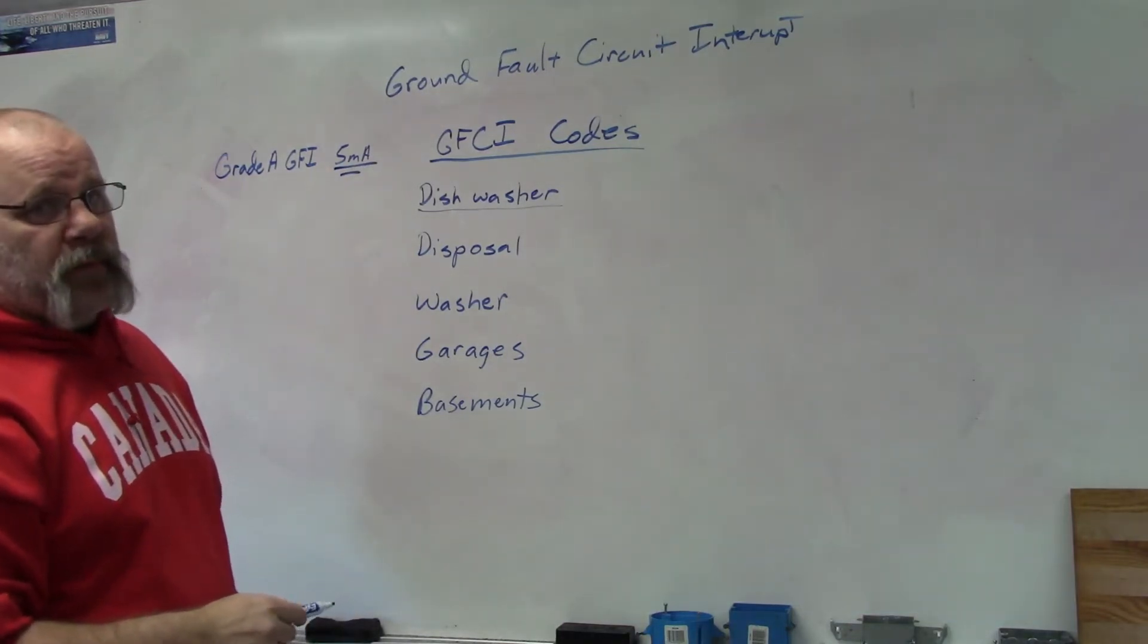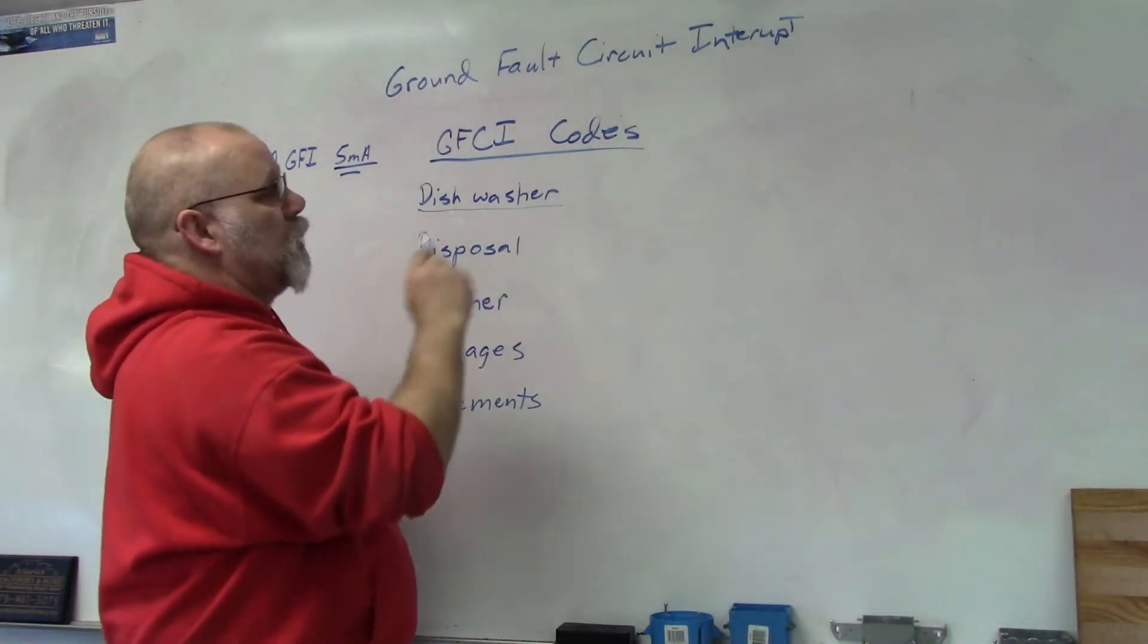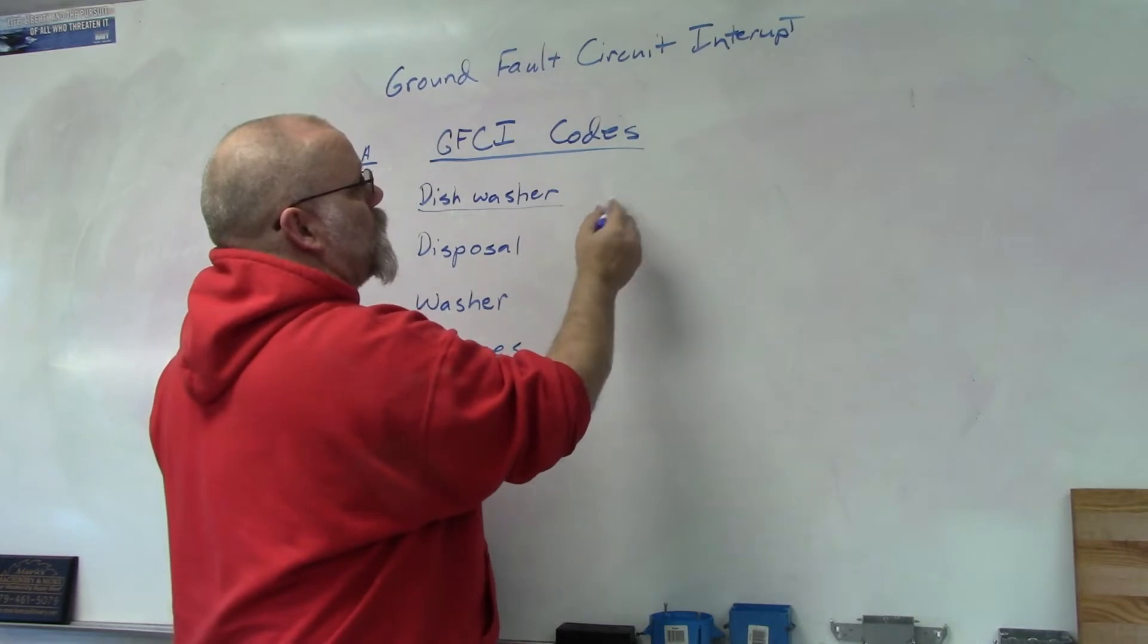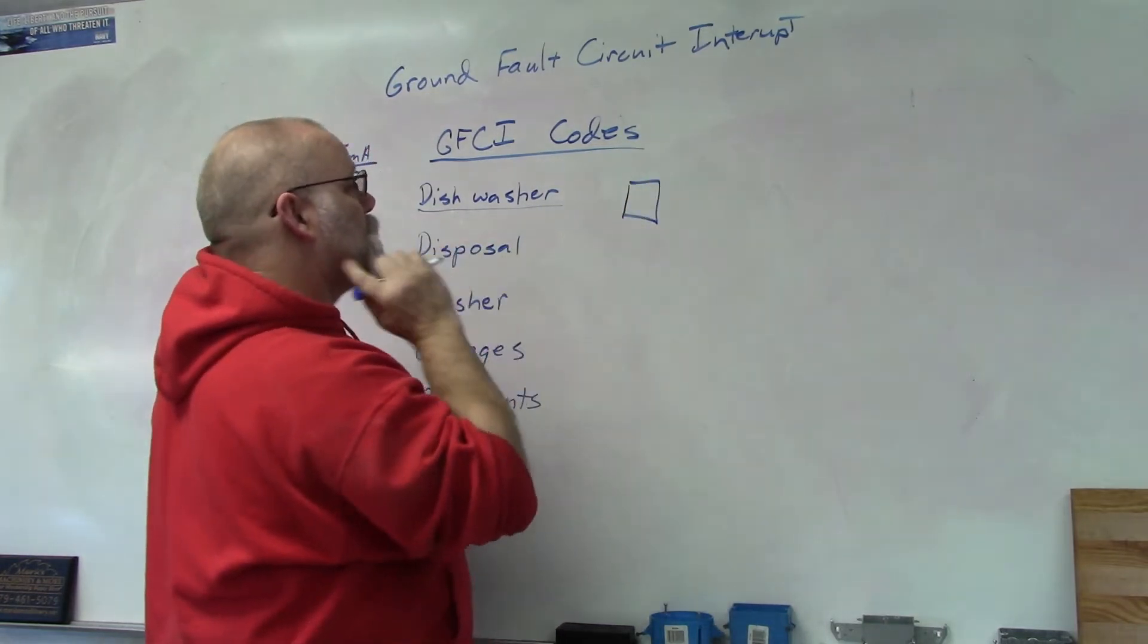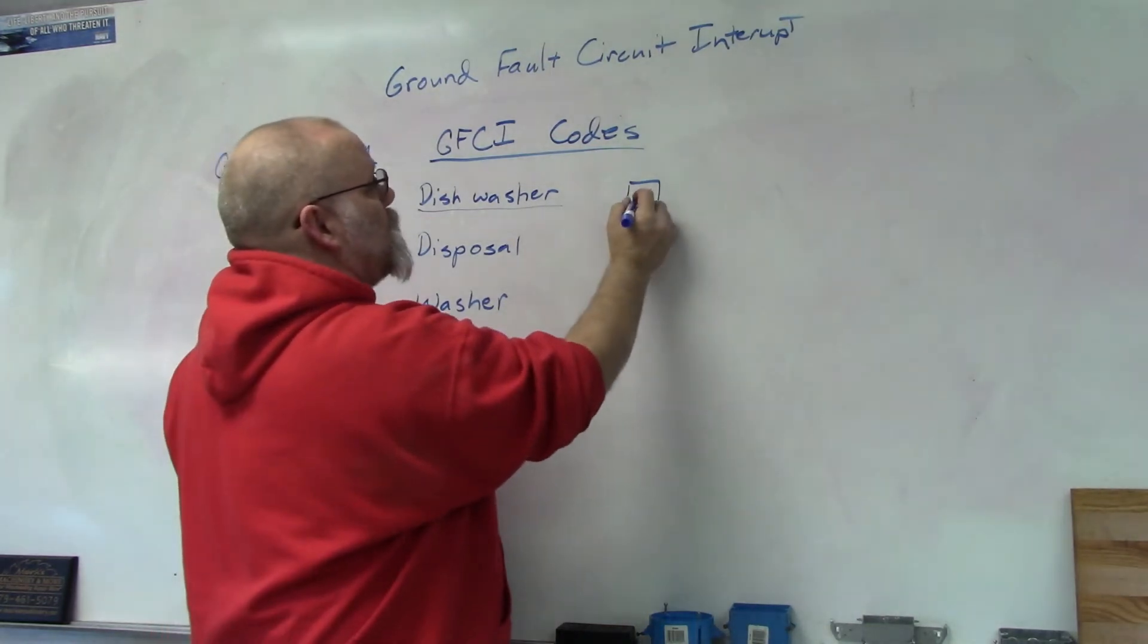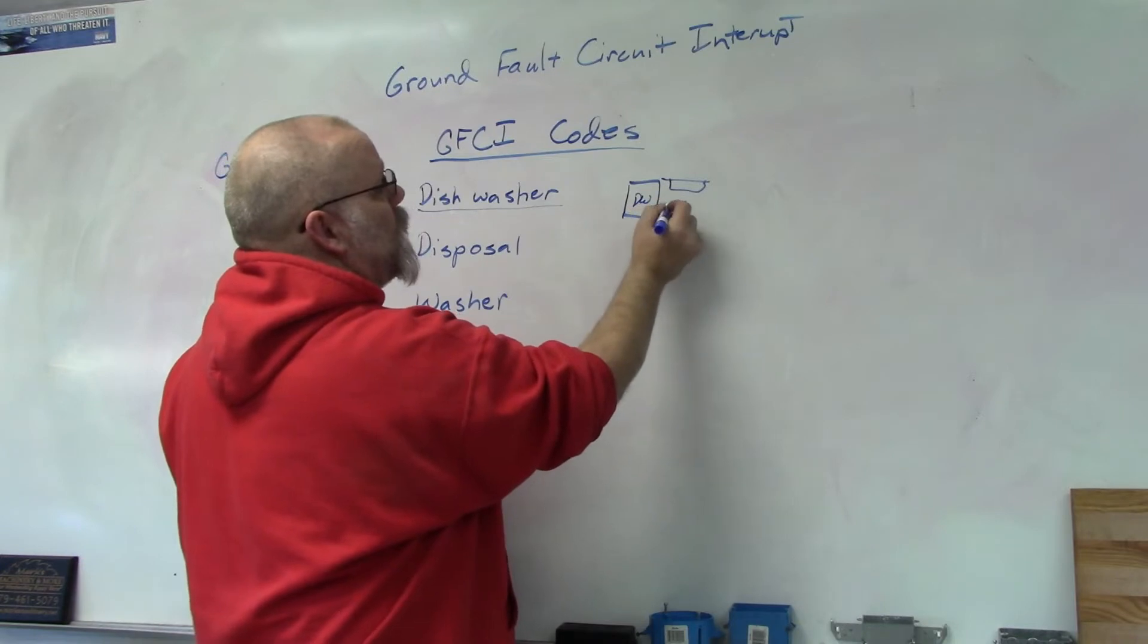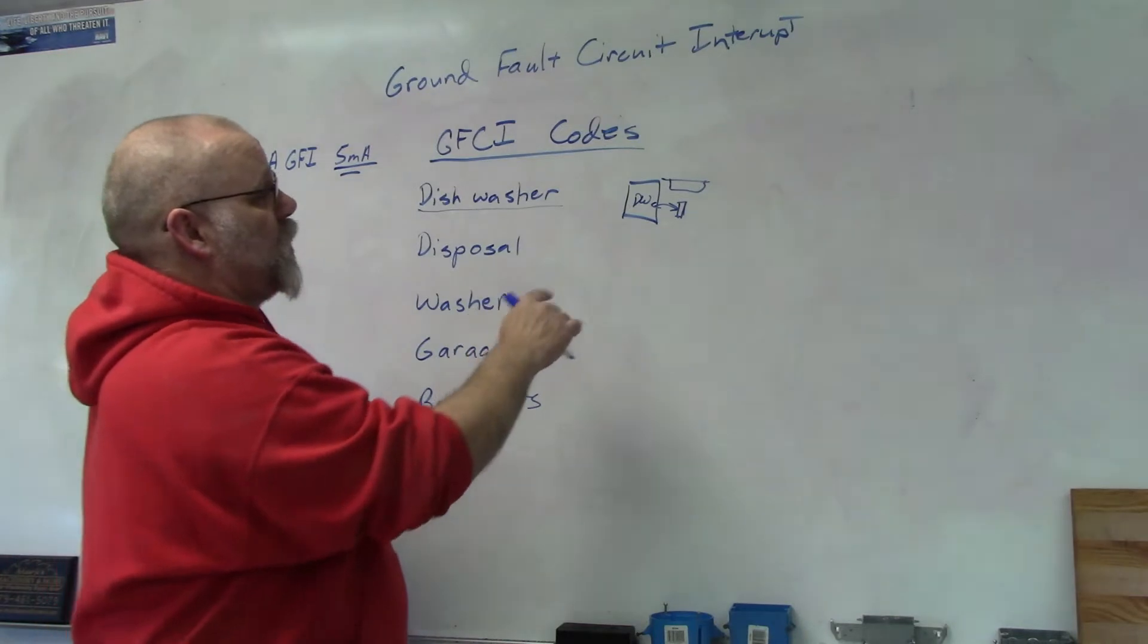If you're going to hook the dishwasher into a GFCI plug, it needs to be in the next compartment. So most dishwashers are placed next to your sink. If this is your dishwasher and then you got your sink, the plug for the dishwasher would be underneath the sink that way it's easily accessible to reset it if it gets tripped.